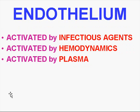What activates endothelium? A lot of infectious agents do. If you remember Virchow's triangle, even the dynamics of flow can activate endothelium — such as significant stasis, eddies, or turbulence, which is one of the big corners of Virchow's triangle. There are also a whole bunch of factors in plasma which can activate endothelium.